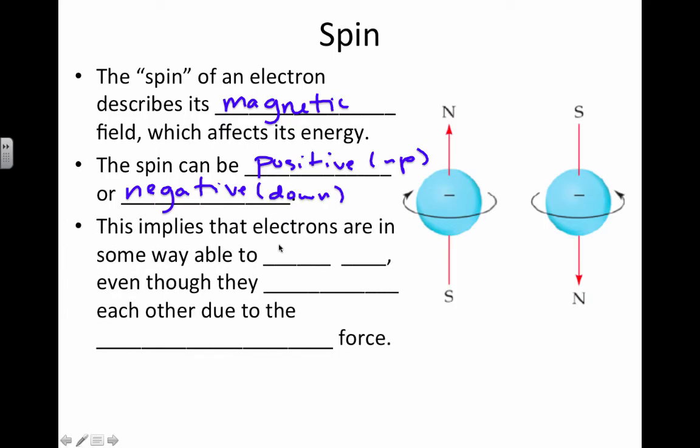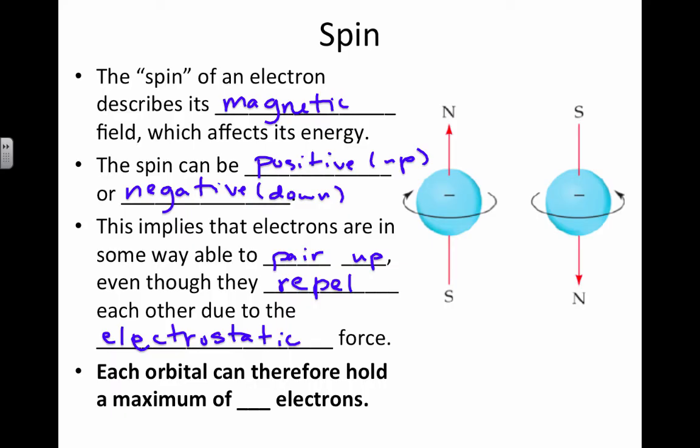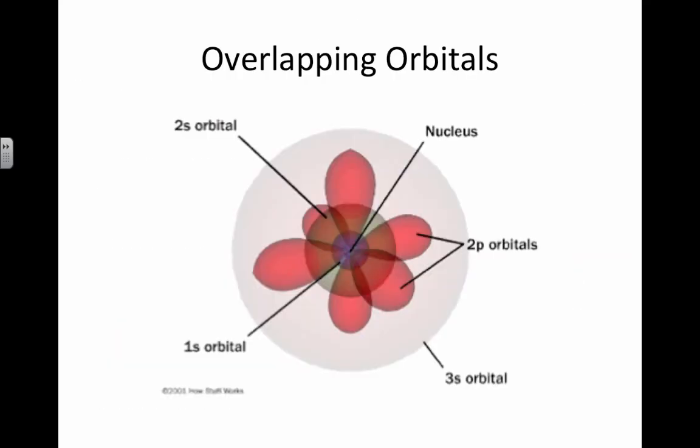We just draw arrows to show this. It implies that electrons are in some way able to pair up. Even though they're equal in charge, the electrons are negative, so they would repel each other due to the electrostatic force. But somehow they can occupy the same orbital because they're not spinning in the same direction. Their energies are different, so they can be in the same region of space. But because they can only come in either up or down, positive or negative spin, then only two electrons can fit. So every orbital only holds two electrons.